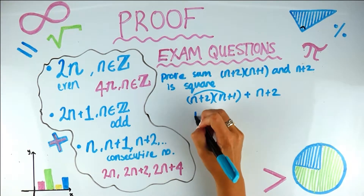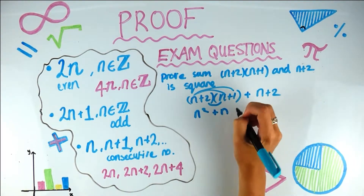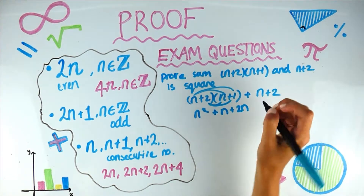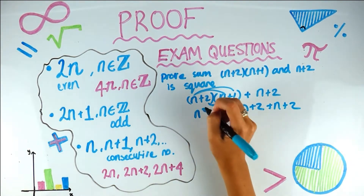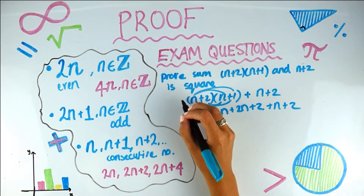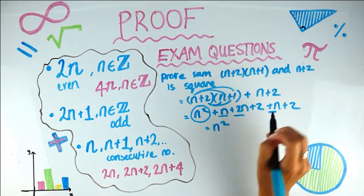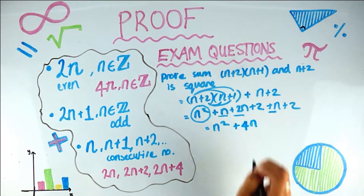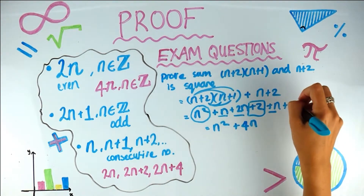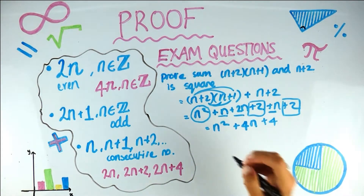Let's expand this bracket: that times that gives n squared, plus n, plus 2n, plus 2. Don't forget the n + 2 at the end. Now collecting like terms: we've got n squared, then 1n + 2n + n gives 4n, and 2 + 2 gives 4, so we have n squared + 4n + 4. We want to prove it's a perfect square, so always think about the end goal.